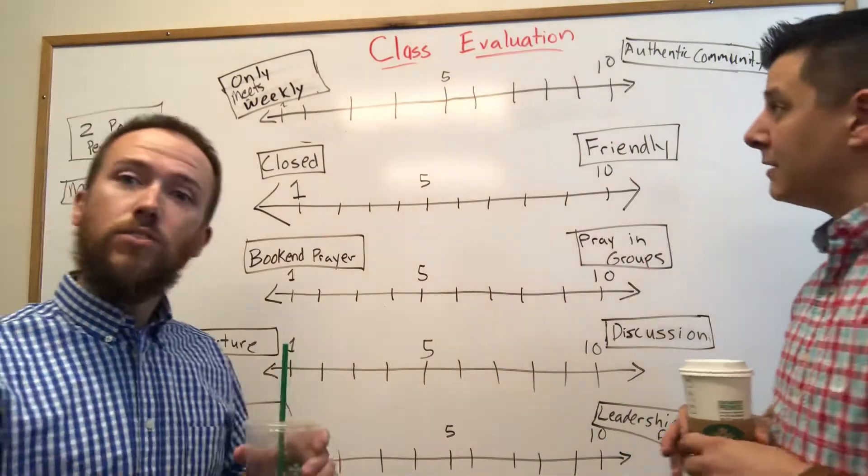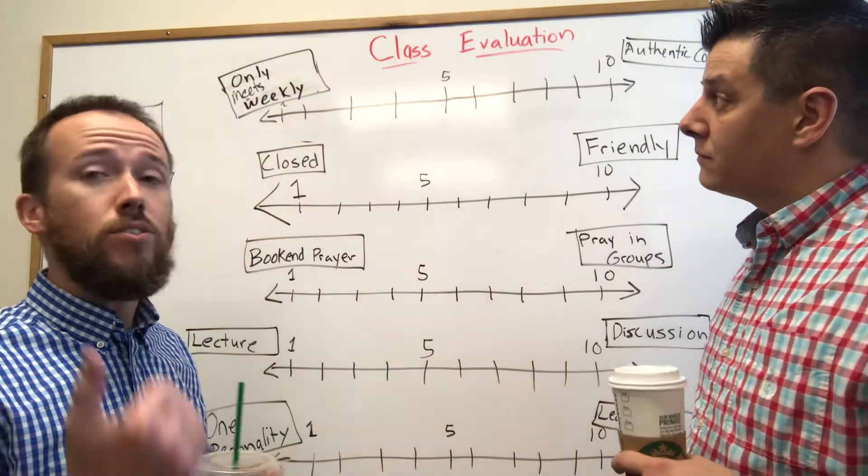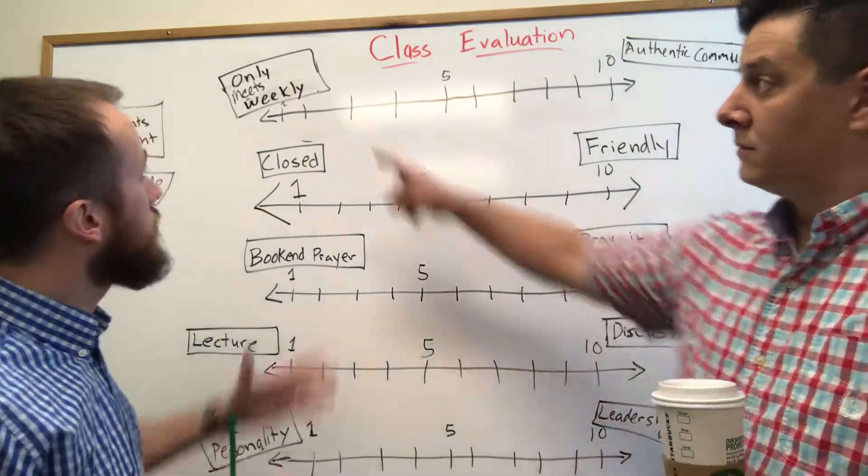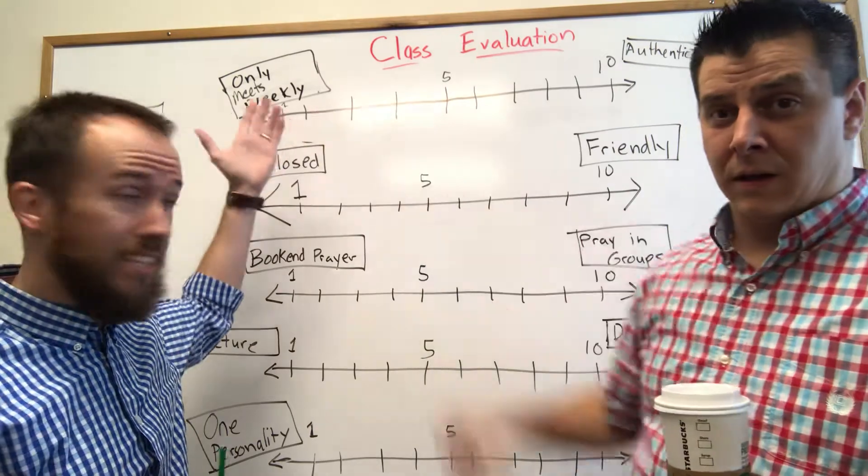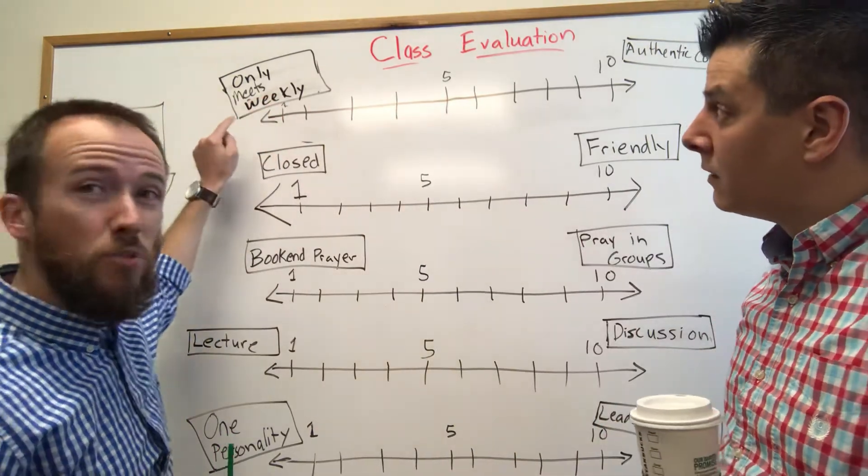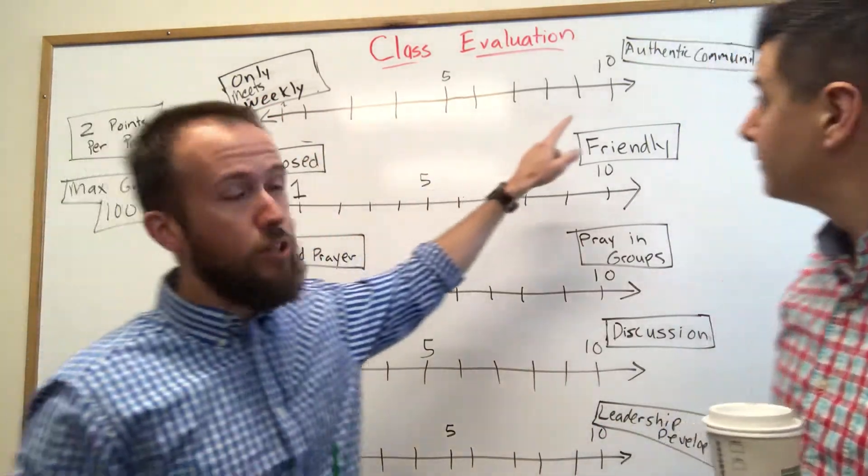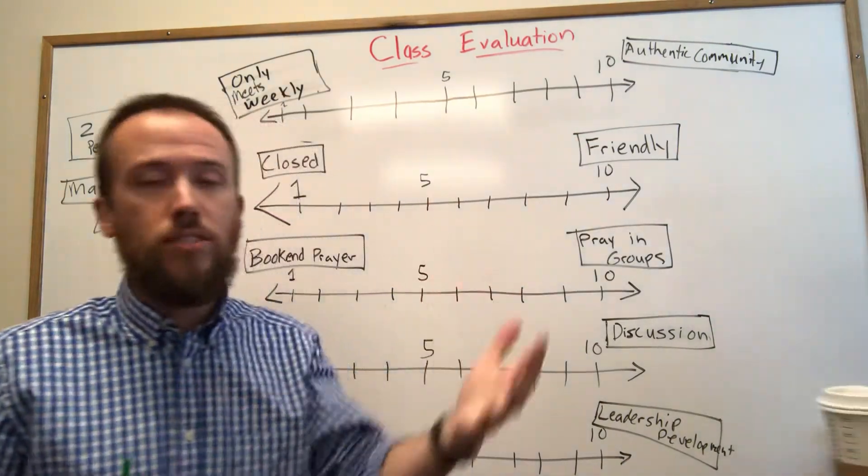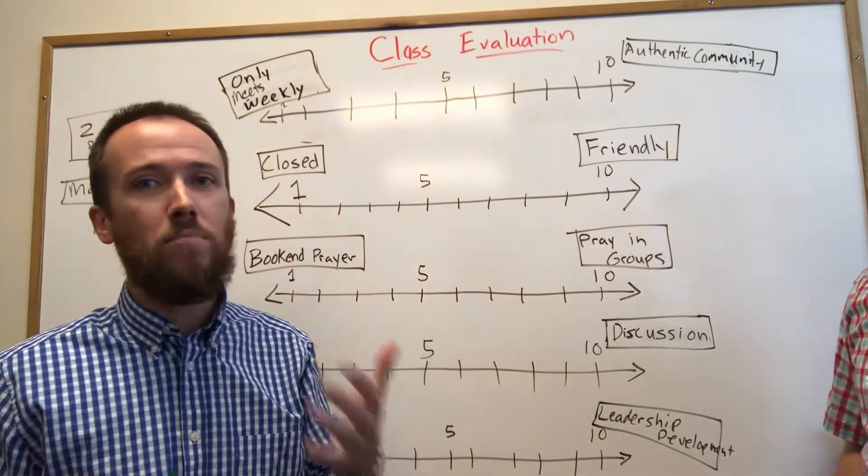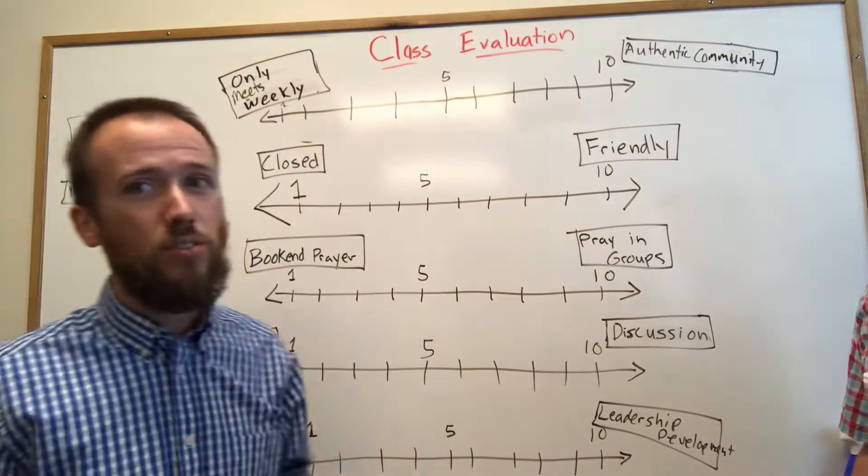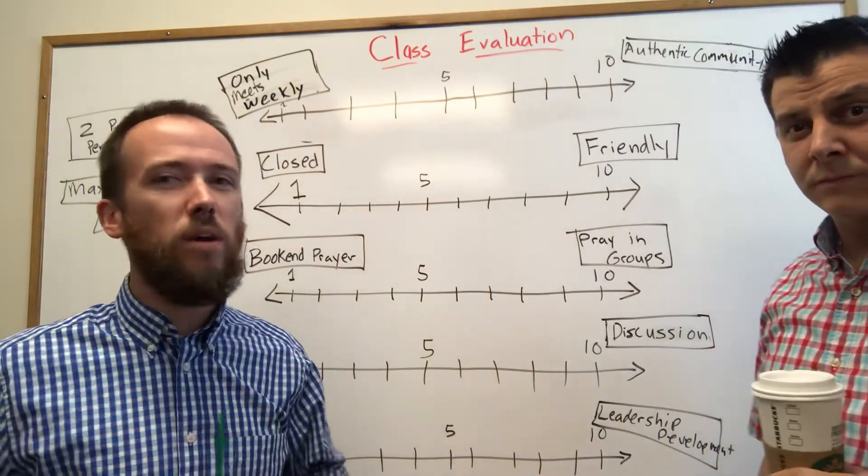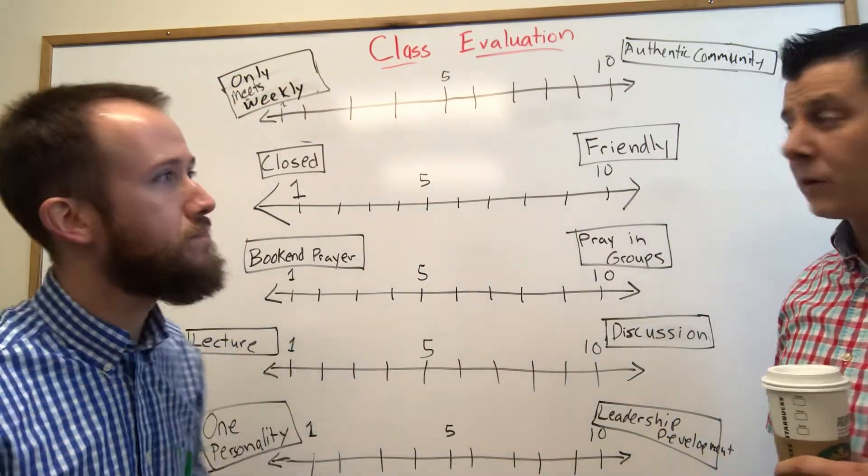So one of the qualifications to be a group at Christ Place Church is that you have to meet weekly. Well, one thing we want to get you to evaluate yourself on: are you only meeting weekly or do you actually have authentic community time outside of your regular group time? That's one of the things you can really question yourself on this week and do a harsh evaluation on yourself. Really see where you're at.